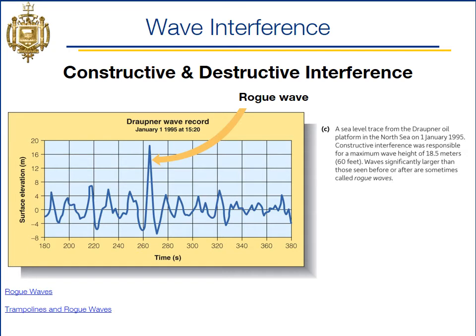Here's an actual trace of sea surface elevation versus time. When you see a huge spike which is abnormal from the rest of the trace, that's a rogue wave. That actually happens once in a while at sea.